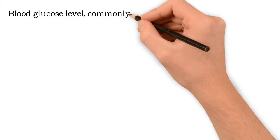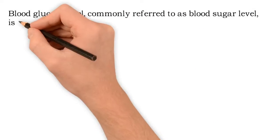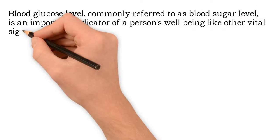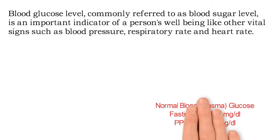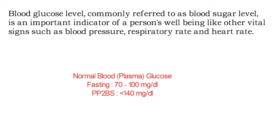Blood glucose level, commonly referred to as blood sugar level, is an important indicator of a person's well-being like other vital signs such as blood pressure, respiratory rate and heart rate. Normal fasting blood glucose — meaning 8 to 10 hours after meals or an overnight fast — is 70 to 100 mg per deciliter, and PP2BS, meaning 2 hours after meals, is less than 140 mg per deciliter.